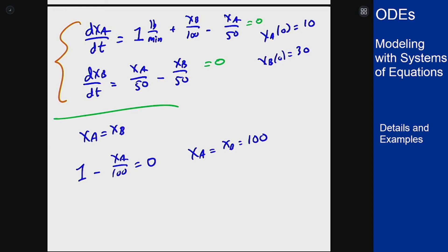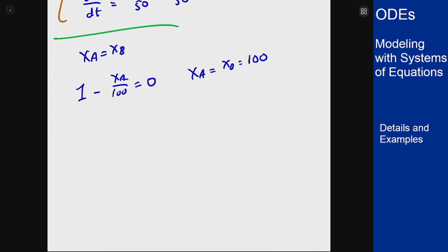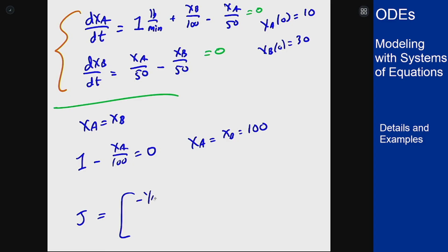It has a little shift in it. It's in fact a non-homogeneous linear system. I can see that at that point the Jacobian is going to be negative 1/50, 1/100, 1/50, negative 1/50. And then I can look to find the eigenvalues here to see what's going to happen.